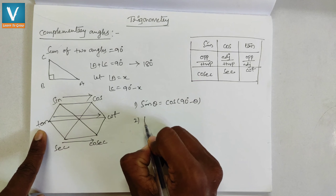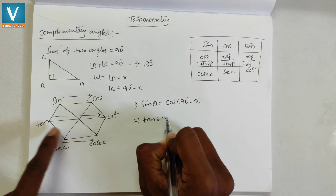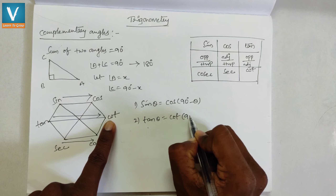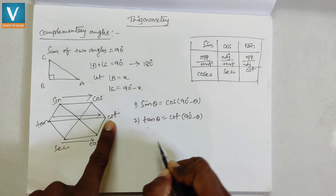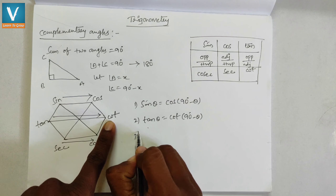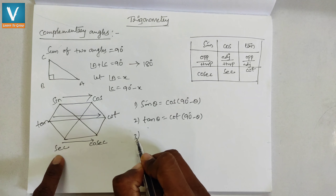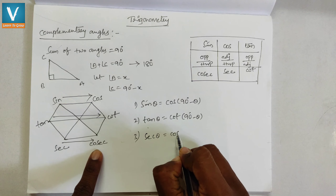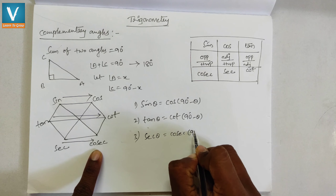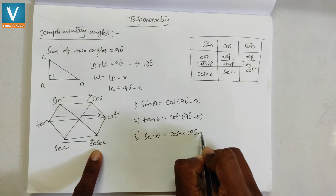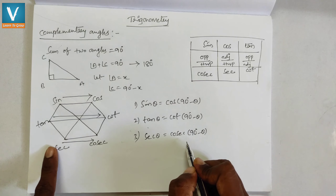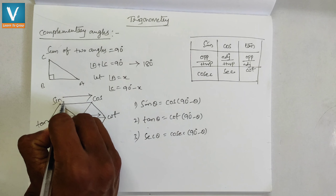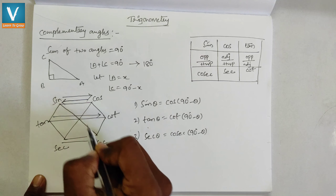From the hexagon, tan θ = cot(90° − θ). And the third formula: sec θ = cosec(90° − θ).